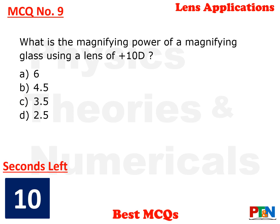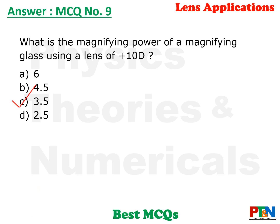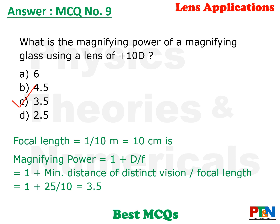Next MCQ: what is the magnifying power of a magnifying glass using a lens of +10 D? Options: 6, 4.5, 3.5, or 2.5. You have 10 seconds. The correct option is option C, that is 3.5. Let's understand the calculation. The lens is +10 D, which is a convex lens, so focal length = 1/10 meter = 10 cm. The formula for magnifying power is M = 1 + D/f, where D is the minimum distance of distinct vision. Substituting: 1 + 25/10 = 1 + 2.5 = 3.5.